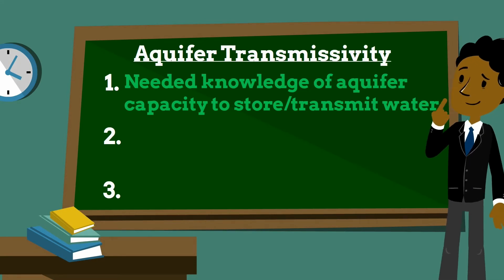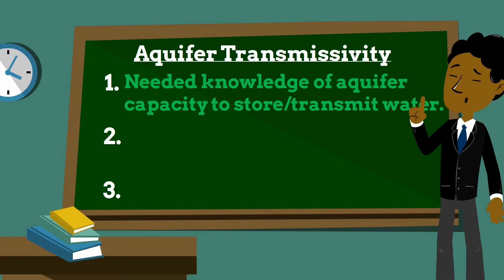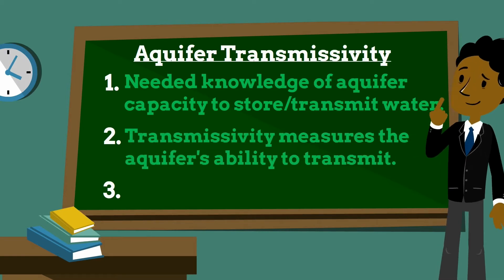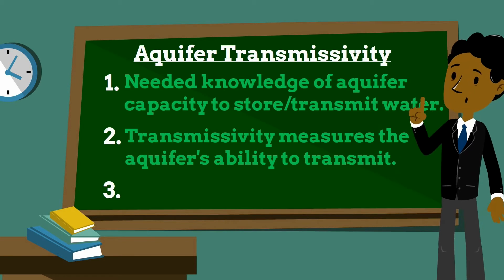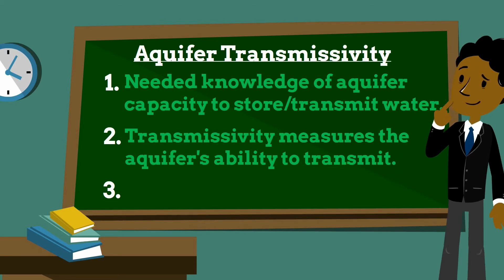This requires estimates of key hydraulic parameters, such as transmissivity, among other ideas. Transmissivity is a hydraulic property which measures the ability of the aquifer to transmit groundwater throughout its entire saturated thickness.